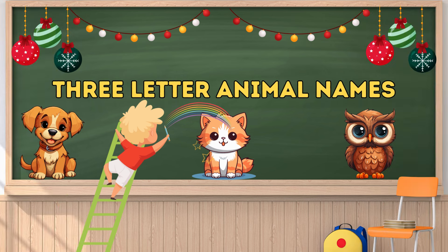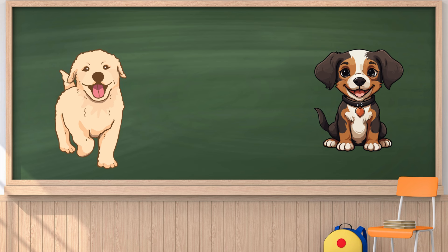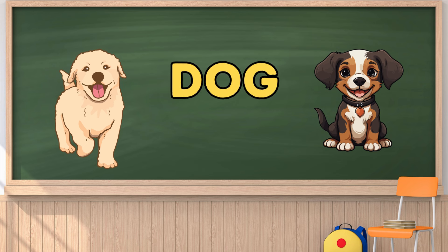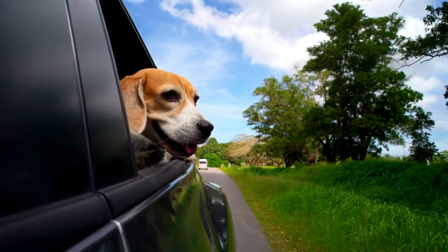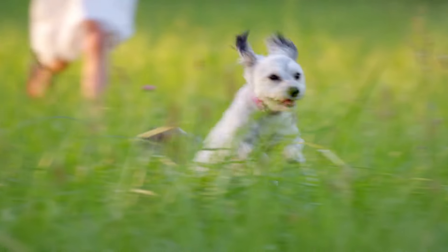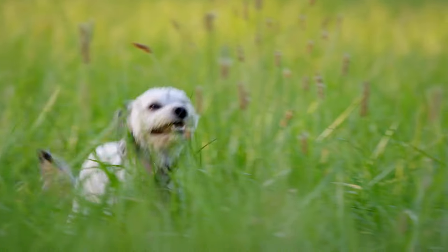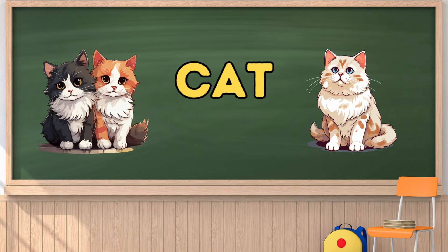Children, let's learn three-letter animal names. Which animal is this? Dog. D-O-G. Dog. This is cat. C-A-T. Cat.